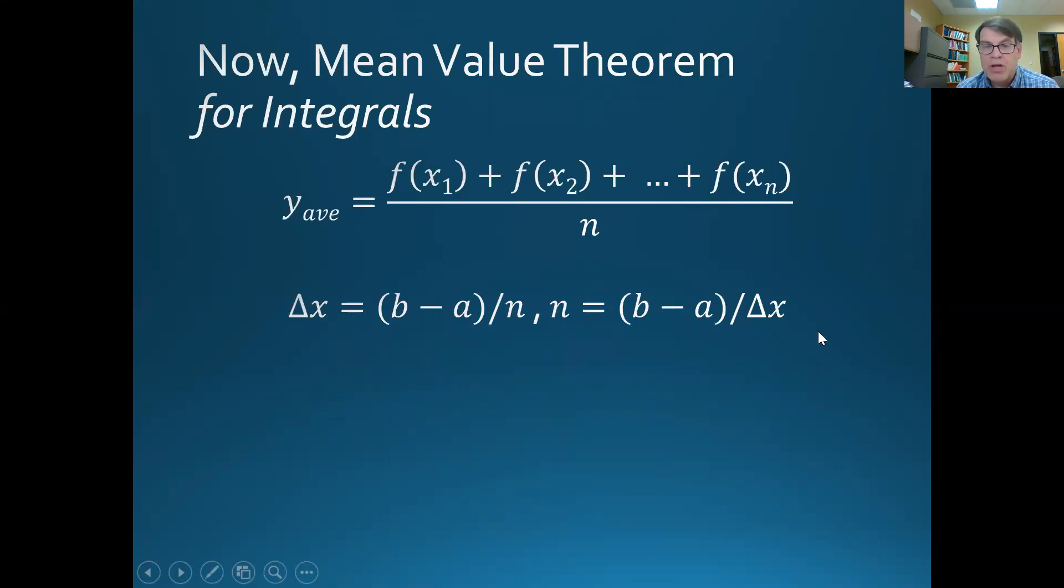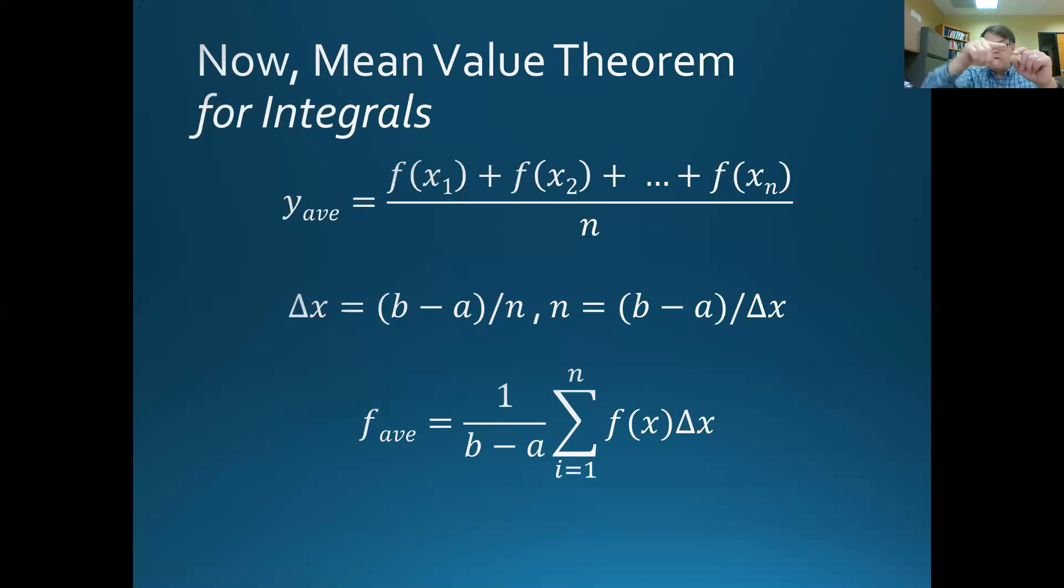So I take that information, and now I can put it into a summation kind of formula. So f average, that is the y average, f of x is y usually, right? So the f average, the function average, the average value, I get this, it's going to be the sum of all the slivers of each little fx sliver times the width, delta x, right? So I take all the delta x's times all the y's, and that's going to give me kind of the summary of it.